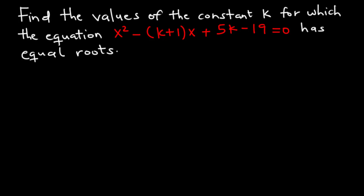Find the values of the constant k for which the equation x squared minus bracket k plus 1 times x plus 5k minus 19 equals 0 has equal roots.